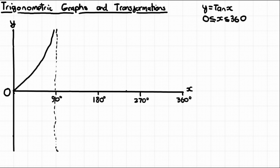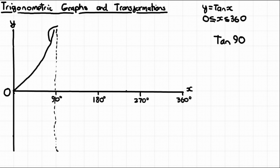An asymptote is a line a graph approaches but never actually touches — more detail is in the reciprocal graphs video. There is no value for tan(90): if you put it into a calculator it gives an error, because the graph doesn't cross 90 degrees.